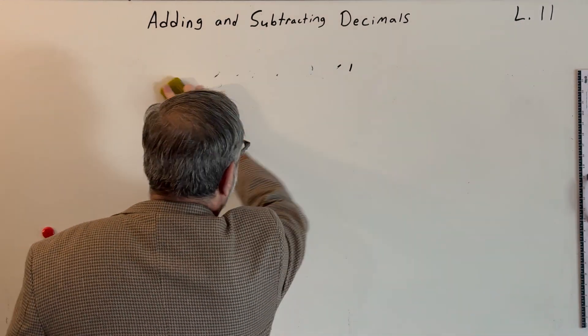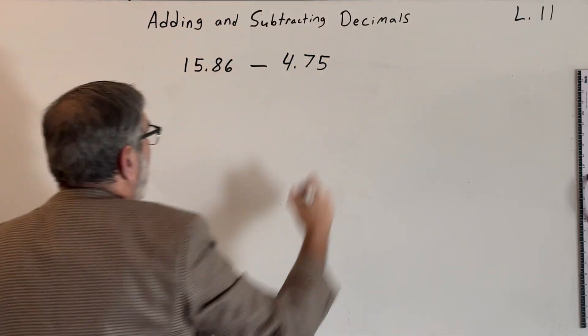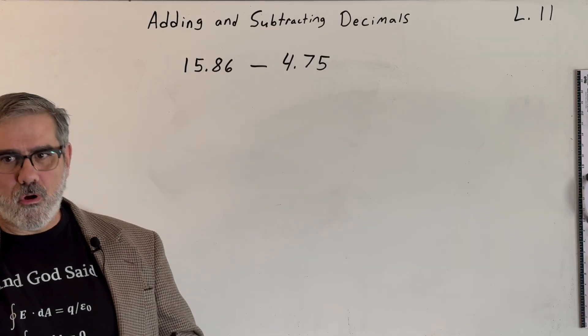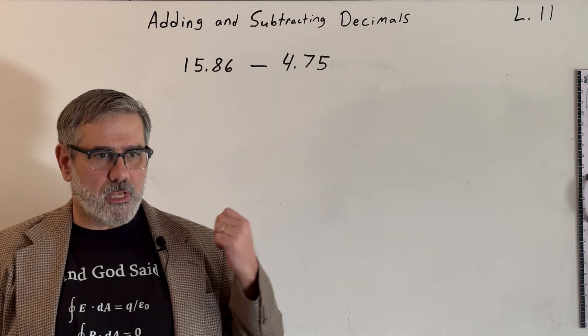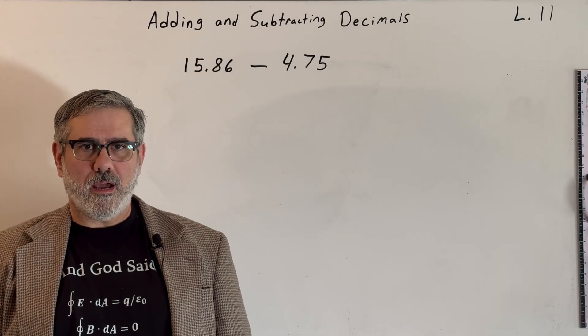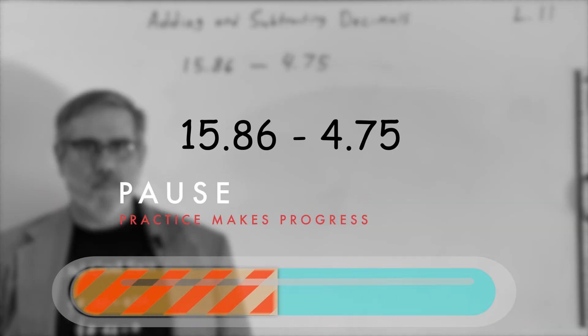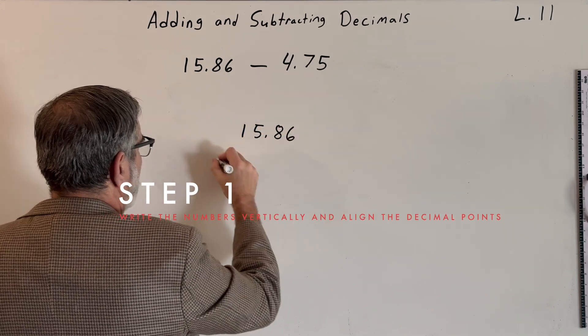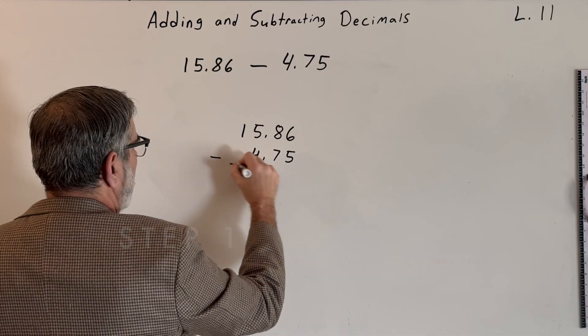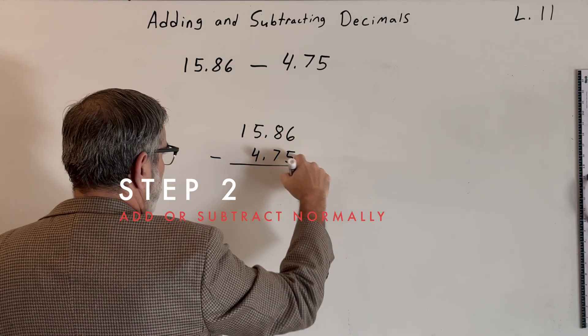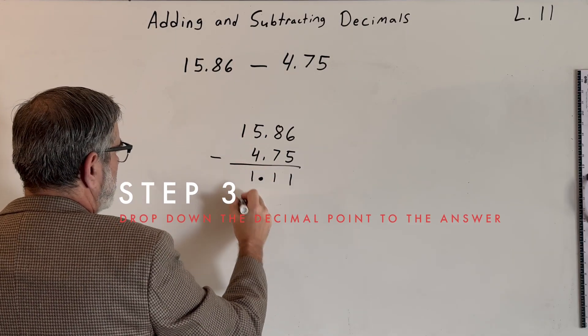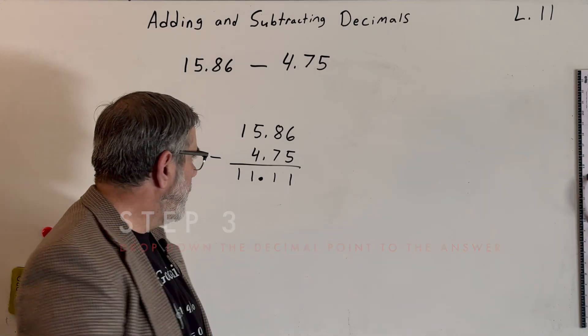This time it's a subtraction problem, but everything applies to what I said. Line up the decimal points. Add or subtract as normal. In your solution, make sure the decimal point is lined up with the decimal point in the problem. Okay, so go ahead and pause the video and try that now. So, again, we'll write it in the vertical fashion. 15.86 minus 4.75. Line up the decimal point and then we just subtract. 6 minus 5 is 1. 8 minus 7 is 1. We'll write the decimal point. 5 minus 4 is 1. A lot of 1's here. And drop down, 1 minus 0 is 1. And so we get an answer of 11.11.